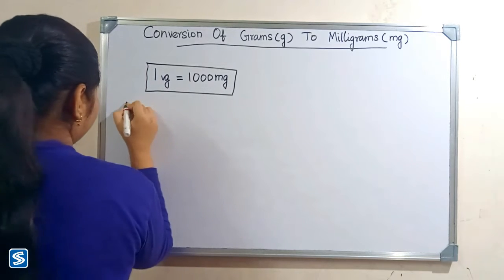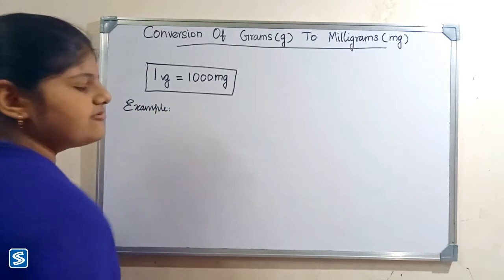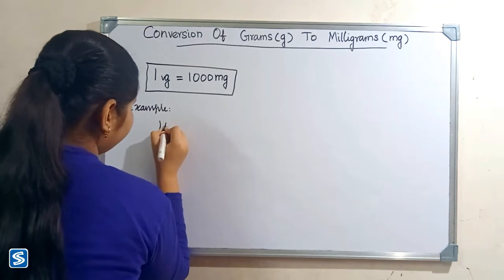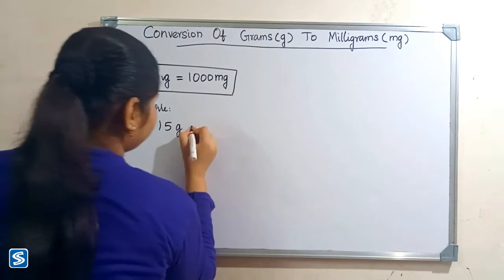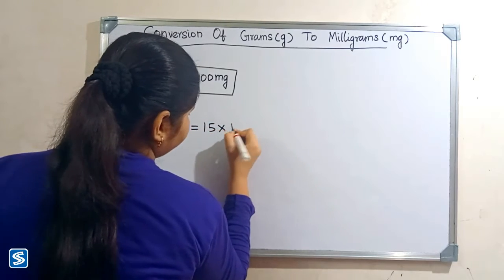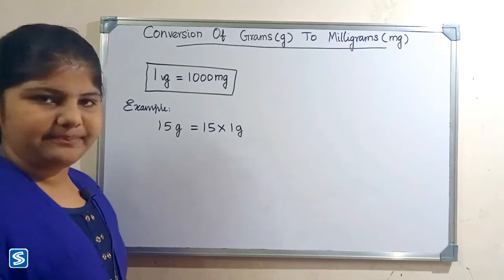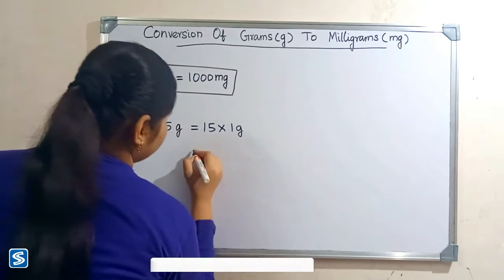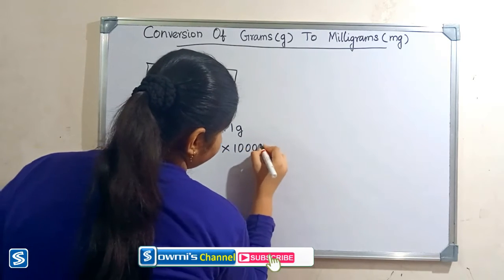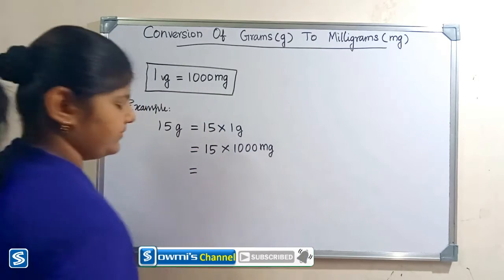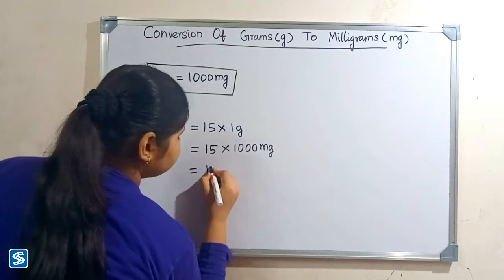For example, we can take 15 grams. 15 grams can be written as 15 x 1 gram. Now we have to substitute 1000 milligrams in the place of 1 gram, so 15 x 1000 milligrams, which will be 15,000 milligrams.